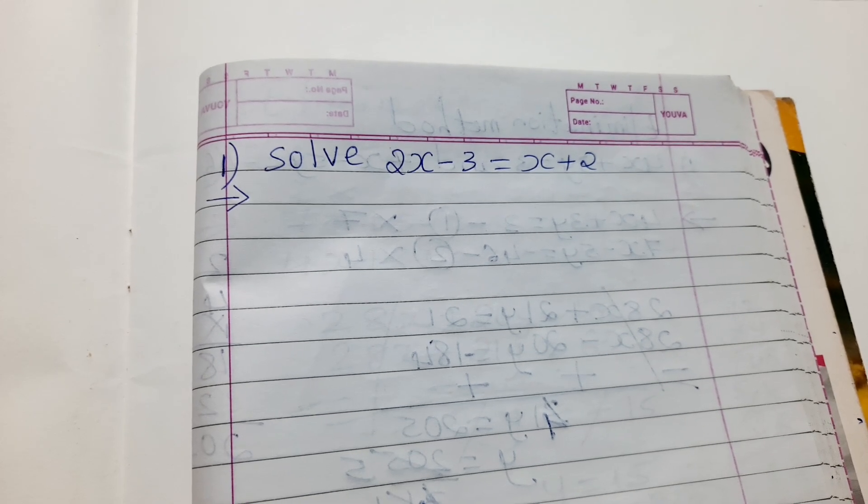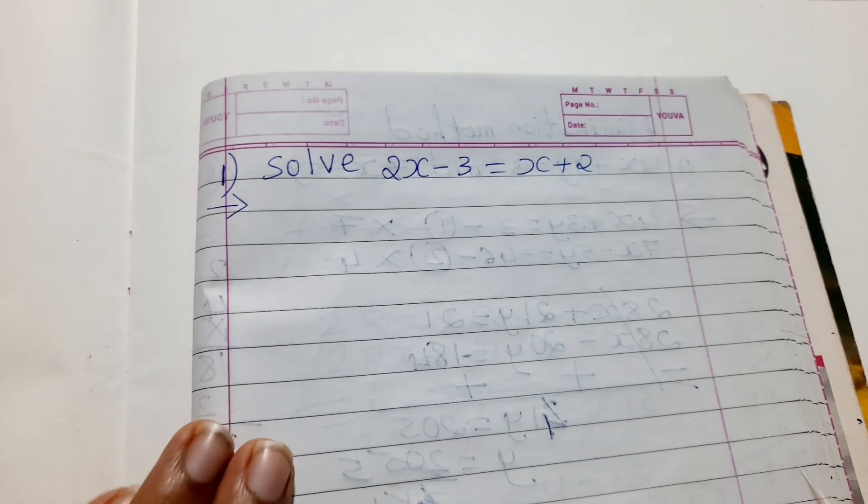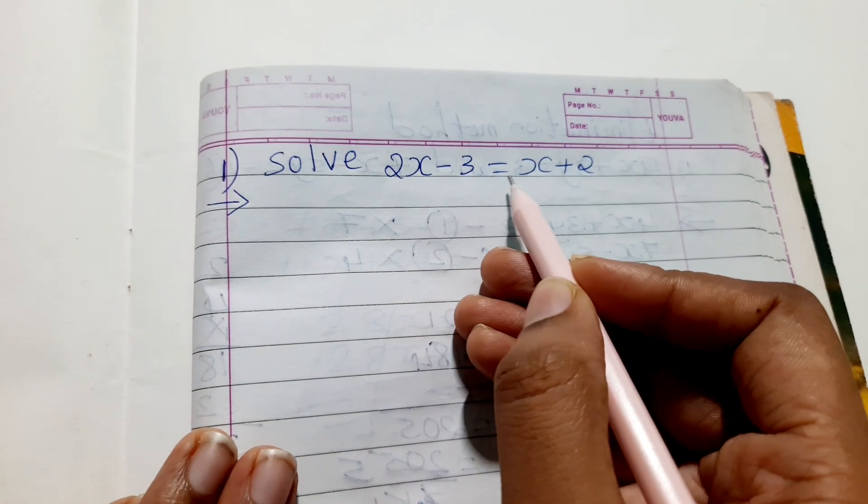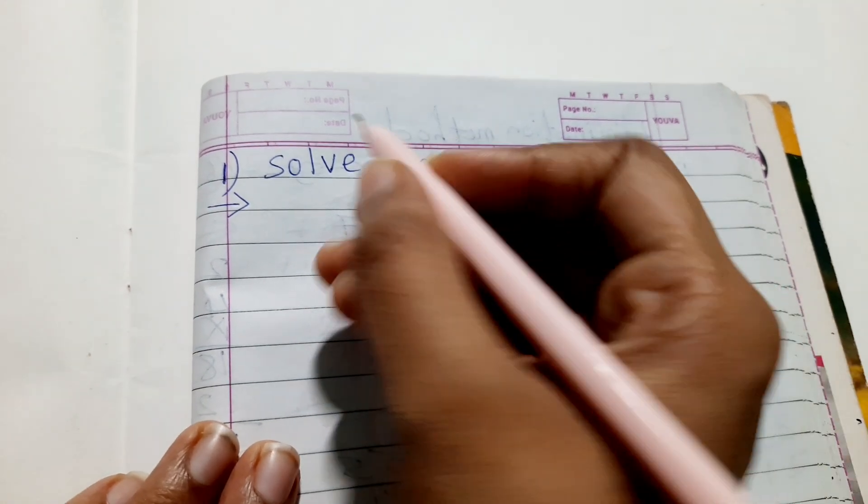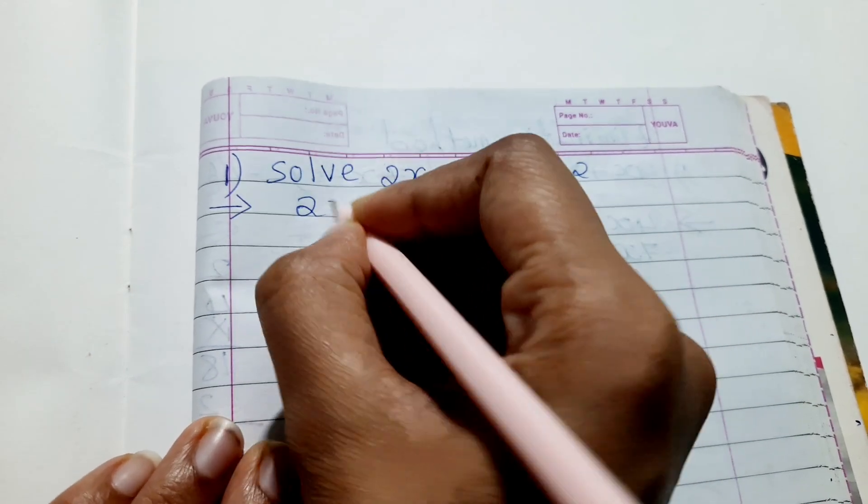Welcome to today's class of mathematics. Today's question is: solve 2x minus 3 equals x plus 2. The question I have taken from class 8 mathematics. Let me solve this. First, write down this.